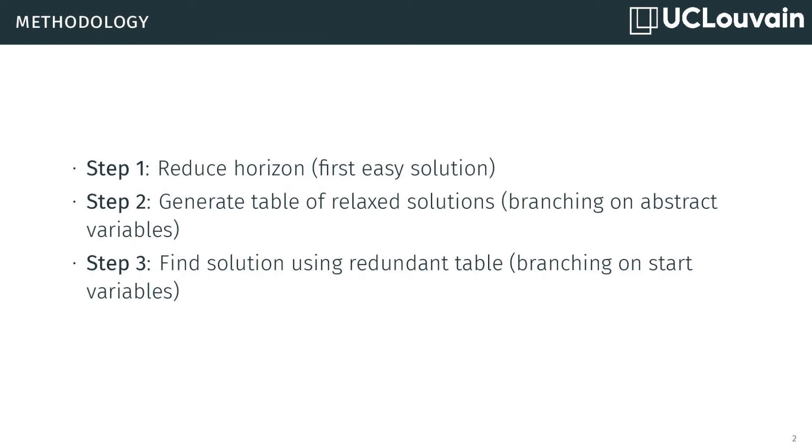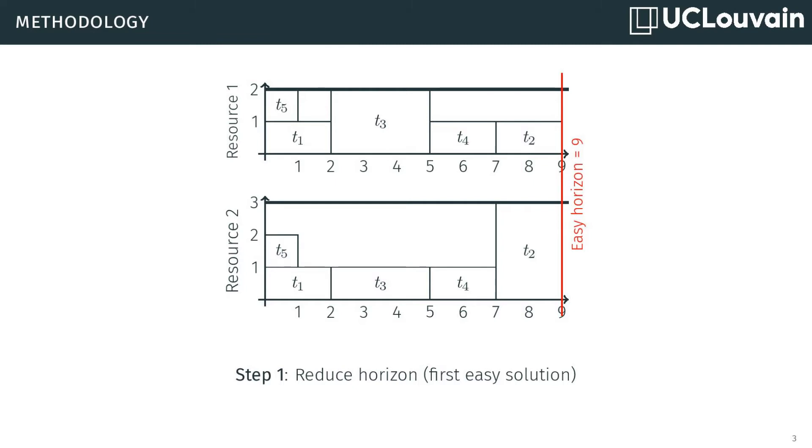Our methodology is simple and organized in three steps. First, the reduction of the horizon, then the generation of the table, and finally the solving of the problem. Let's illustrate it with an example. The first step is trivial. We find an easy solution to reduce the horizon. In the example, an easy solution leads us to a horizon of 9. This helps us consider a smaller start interval when creating our abstract variables.